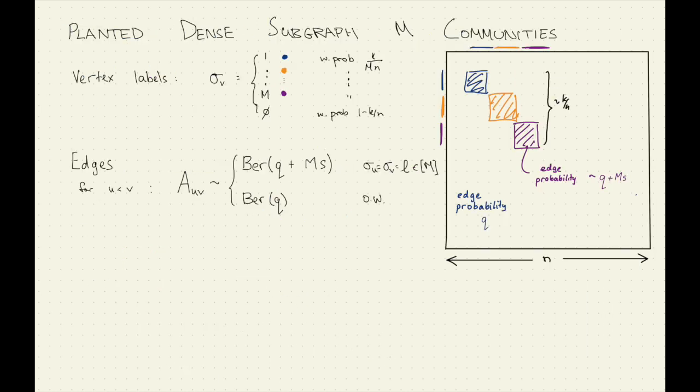Now the binary model. Here we have some more parameters. So this should be an S — what we're interested in now is: you reveal edges with probability Q plus something, and here everything is an Erdős–Rényi random graph with probability Q. And then here you have some higher probability. This is the model in the binary case.